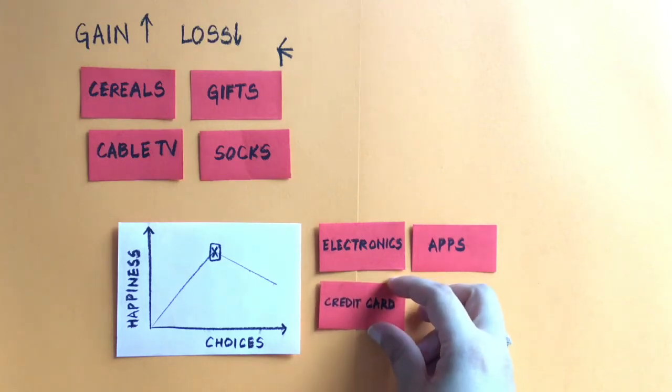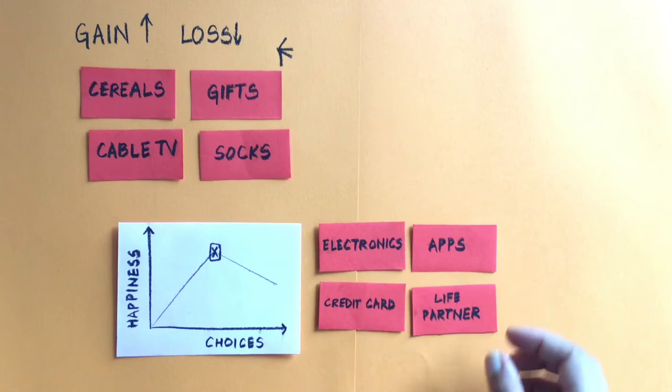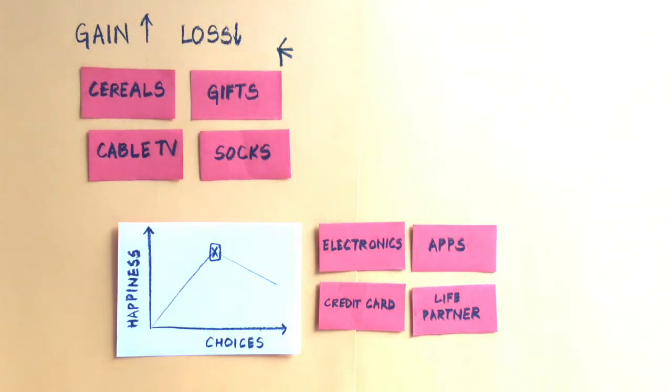I've seen a lot of people maintain multiple credit cards just because they're not able to choose that one credit card that they think will be beneficial for them. Same is the case with life partner, where people end up not getting married or not choosing a life partner because they're overwhelmed with the choices they have, and they're not able to find that one person who has the combination of all the attributes they've seen in different people.